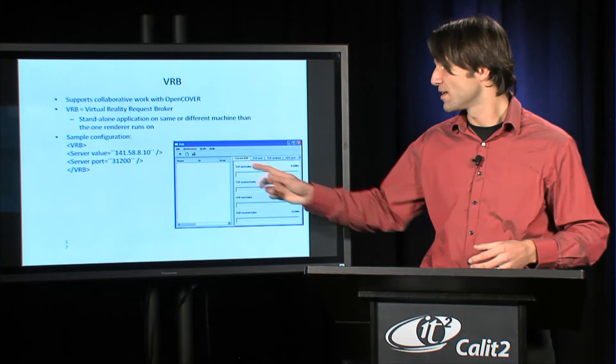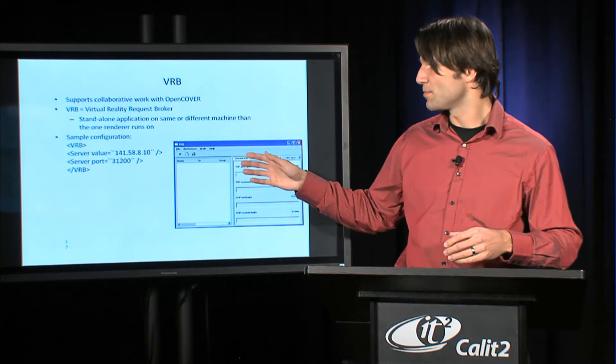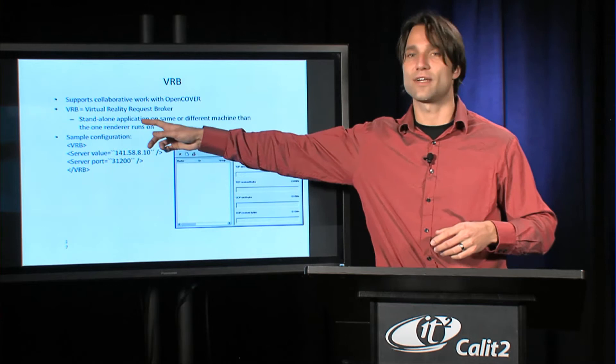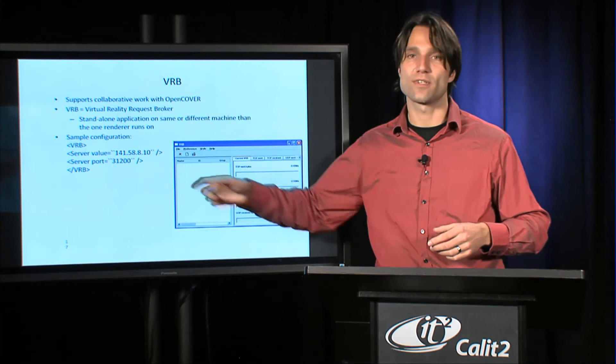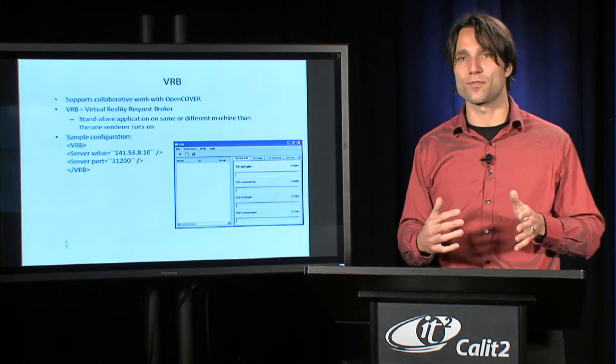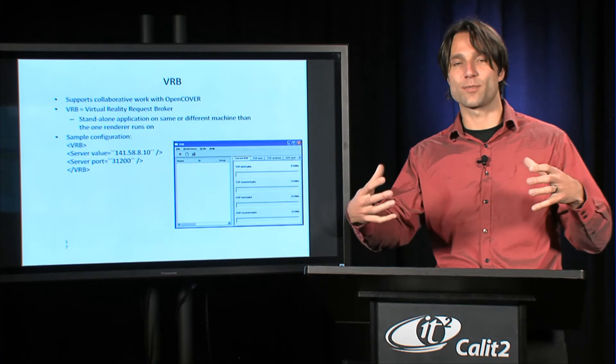In order to connect to someone else's VRB for a collaborative session, you will have to add these lines to the Covice config file. Really the two values that you need are the IP address of the machine that the VRB runs on, and you need the port that the VRB is configured for. If you have that and the firewall allows you through, you should be able to connect to that server, and all the other participants in the collaborative session need to do the same thing to be linked up.